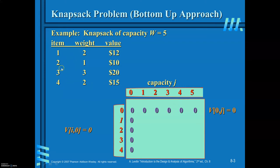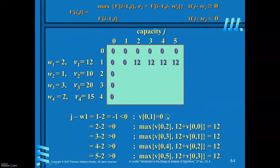The number of items given is 4 and the capacity of the sack is 5. You are required to consider a table of size n plus 1 rows by w plus 1 columns, because we include the 0th row and 0th column. So the number of rows is n plus 1 and the number of columns is w plus 1.